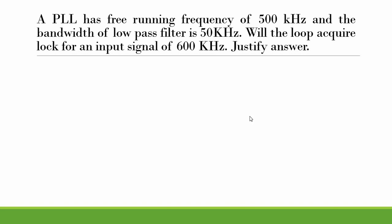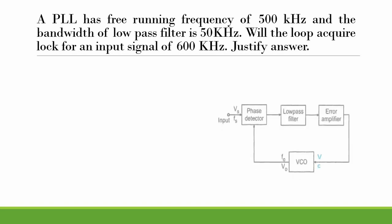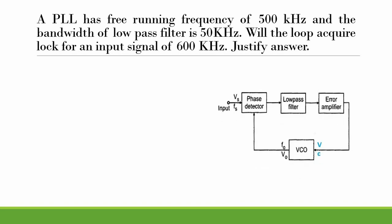Now we will see a problem on PLL. The question is: a PLL has a free running frequency F naught of 500 kilohertz, and the bandwidth of the low-pass filter is 50 kilohertz. Will the loop acquire lock for an input signal of 600 kilohertz? Justify your answer. We have to check whether the PLL will acquire lock or not. Let's refer to the block diagram of the PLL.